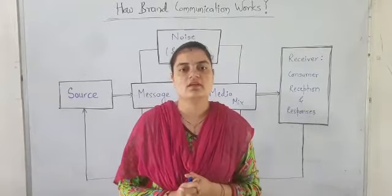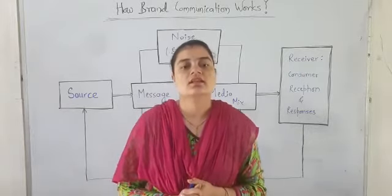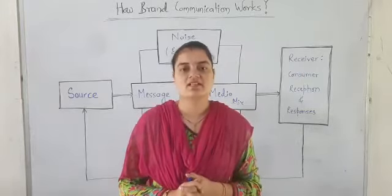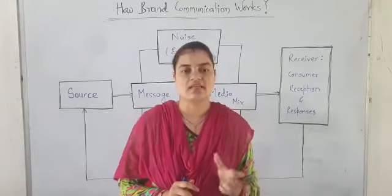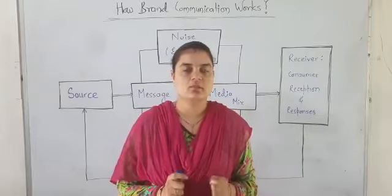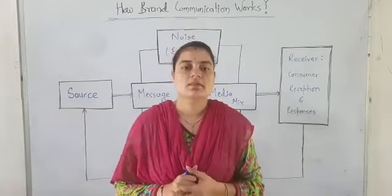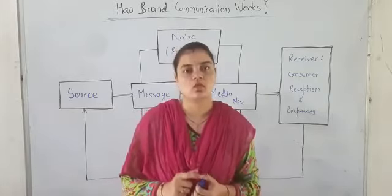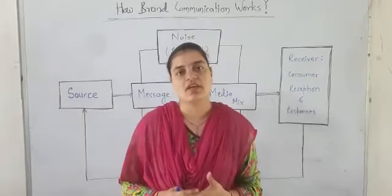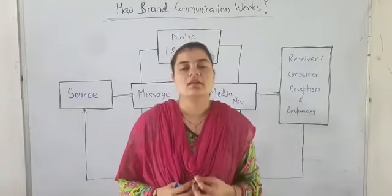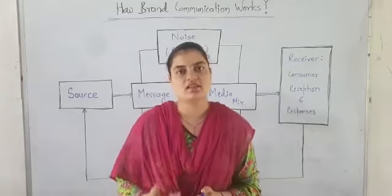What they said in this mass communication model is: the communication process begins with, first, a source. Second, a sender who encodes the message and puts it in words or a picture. Third, there is a message. The message is presented through, fourth, a channel of communication such as newspaper, radio, television, etc. Then the message is decoded or interpreted by the receiver, which is the sixth element — the reader, viewer, or listener.